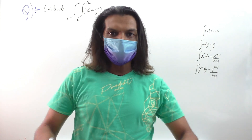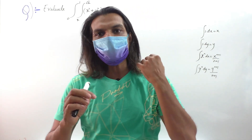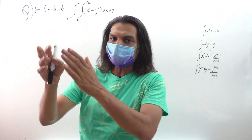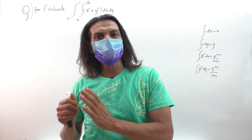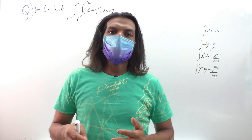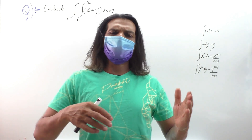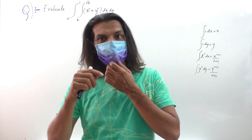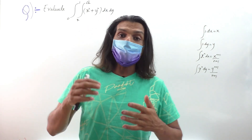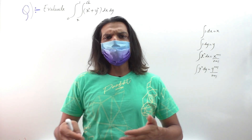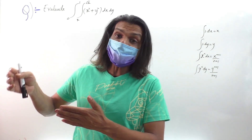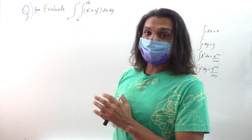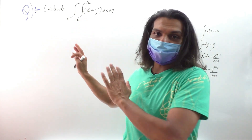Understanding double integration: single integration means 1D, double means 2D — x and y. In double integration, there are always two integrals. The outside integral always has constant limits, and the inside integral has an equation as limits. Outside can be x from 0 to 1, and inside can be y as a function of x, such as y = √x. Here, the inside limits are y = x to y = √x, and the outside limit is x = 0 to 1. So we write: integral from 0 to 1, integral from x to √x, of (x² + y²) dy dx.